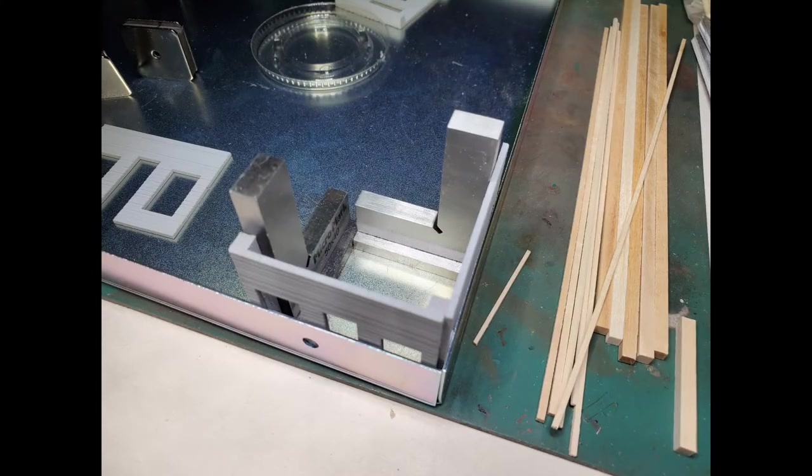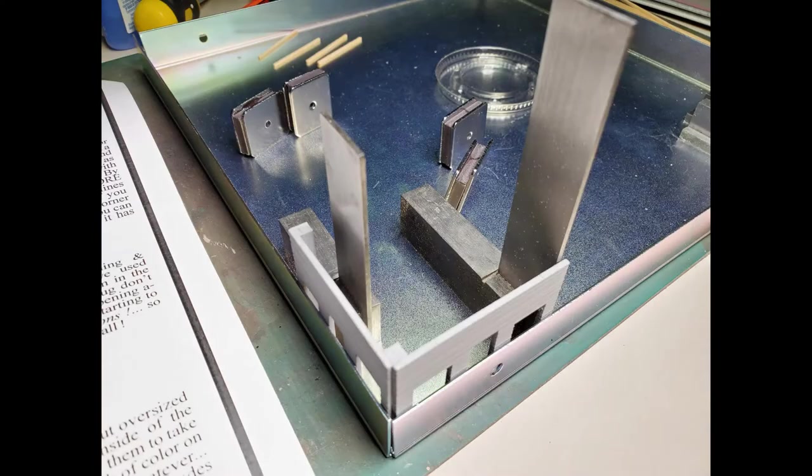Here I've started gluing the wall pieces together, and you'll notice that where the wall sections join, there's a gap in the corner, and that gap is where the wood pieces for the trim are going to go.